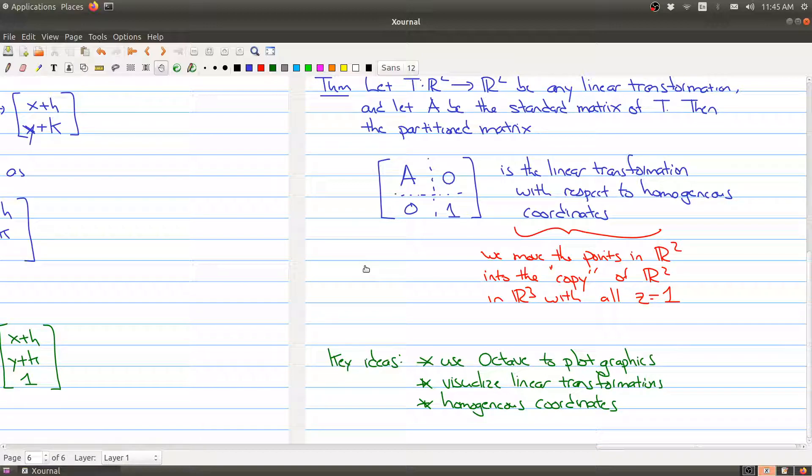Okay, so you can take a look at this section in the textbook - there's lots of interesting things about computer graphics and some more details. But the key ideas I wanted you to take away is that you can use Octave to plot some graphics, we're looking at some ways of visualizing linear transformations, and we've introduced homogeneous coordinates. We won't see it too much in this course, but it's a feature that gets used a lot in different other areas of math. So that's it for today's lecture - there's actually only three parts for today. I hope you enjoyed it and we will be starting on a new chapter in the next lecture. Have a good day.